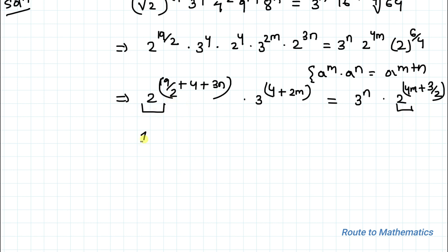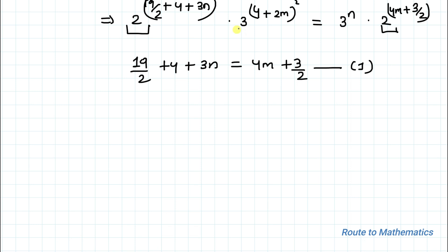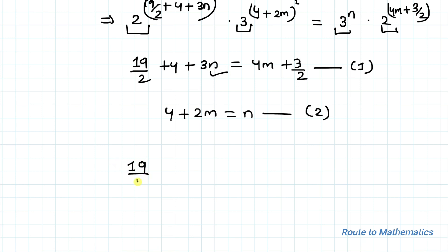Comparing powers of base 2: 19/2 + 4 + 3n = 4m + 3/2. This is our first equation. Comparing powers of base 3: 4 + 2m = n. This is our second equation.